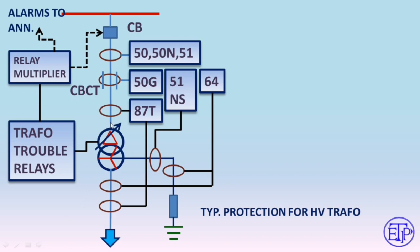For a fault at the high-voltage side of the transformer: if it is a phase fault, relay 50 will instantaneously operate and isolate it. If it is an earth fault, relay 50G will operate first since it is connected with the CBCT and is more sensitive. If 50G doesn't operate, then 50N will operate. Relay 51's functionality relates to the LV side.